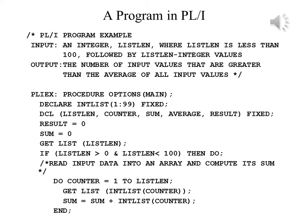Comments in PL/1 begin with a slash and an asterisk, and end in an asterisk and slash, just as in C. The main program begins with procedure options main, and other than the appearance of the options main, looks like any subsidiary procedure. Procedures can appear anywhere within the program, and you could write a procedure right in the middle of the code of another procedure, although this can create major readability problems.